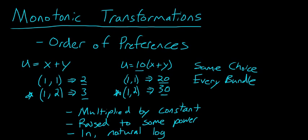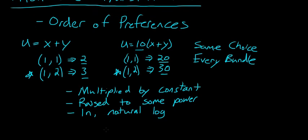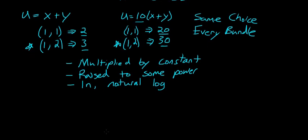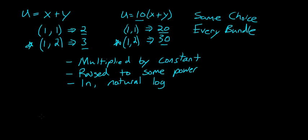Now, examples of bad transformations would be a transformation that changes the order of preferences. If we go with our previous example of u = x + y, then we consider what if we had multiplied by negative 10 instead of 10? So our utility was equal to -10(x + y).